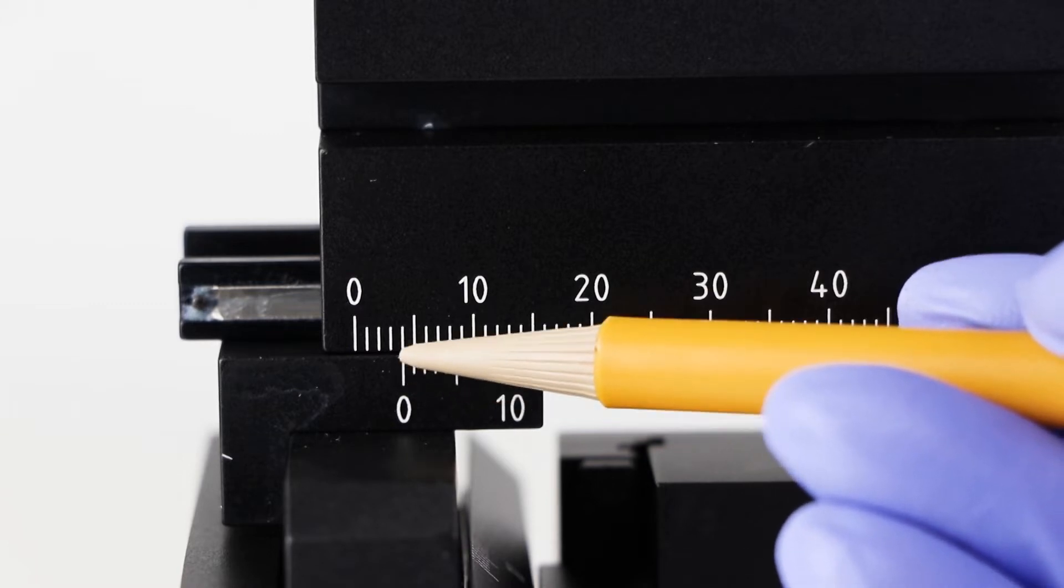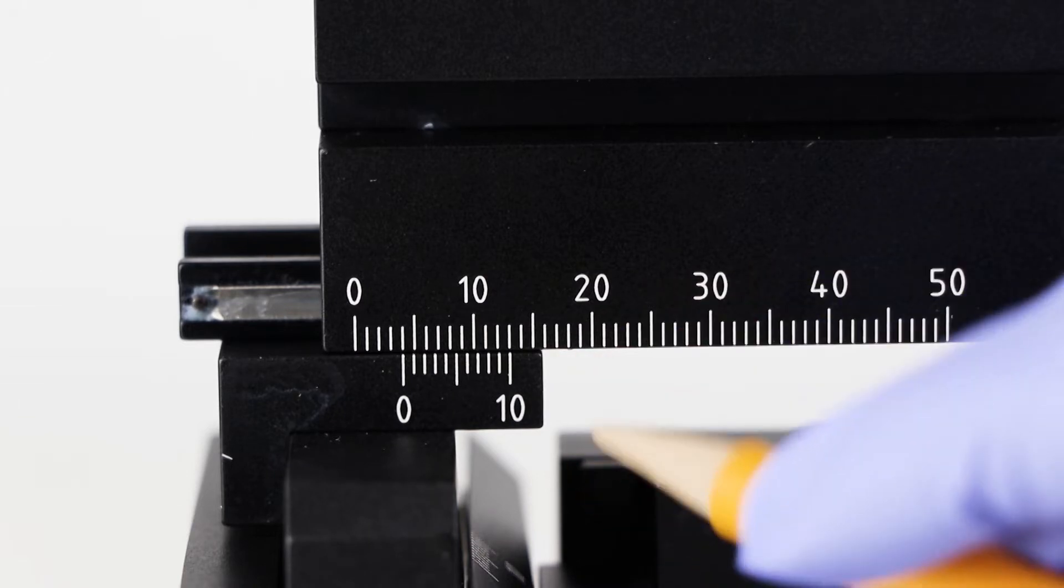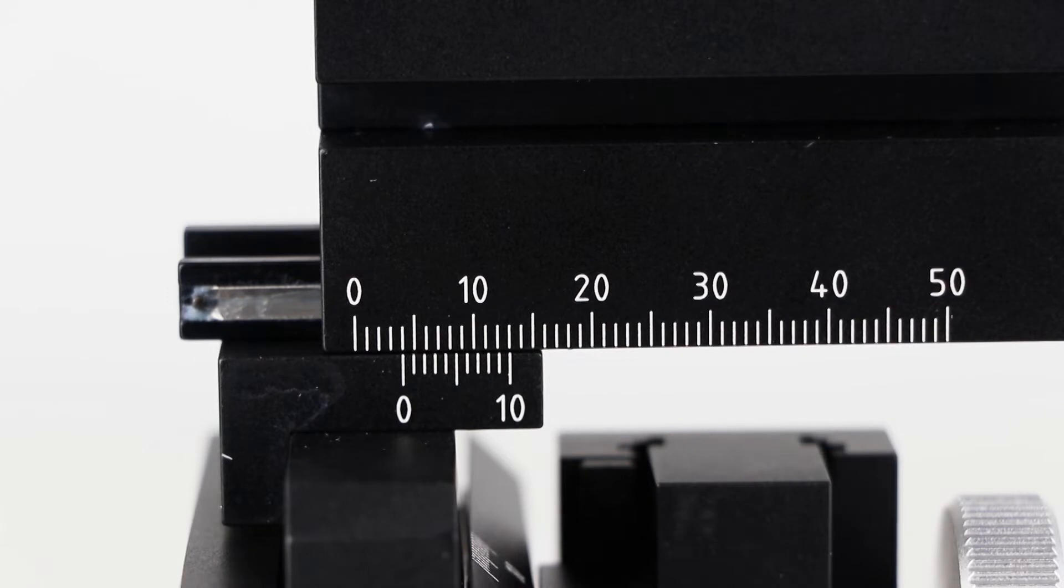The zero on the Vernier scale lines up with the four on the main scale. The ten on the Vernier scale also lines up with the mark on the main scale, but we'll ignore that second line. This measurement is exactly 4.0 millimeters.